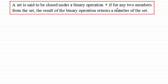I've got here a definition which we'll read through and I'll do some examples to show you this concept. You'll also get a chance to do an example yourself. So a set is said to be closed under a binary operation, which we'll call star here, if for any two members from the set the result of the binary operation returns a member of the set.